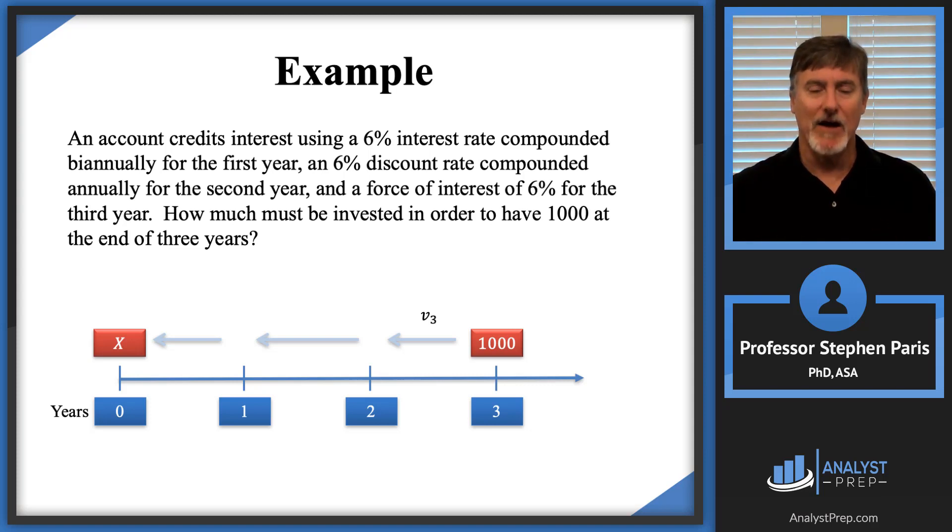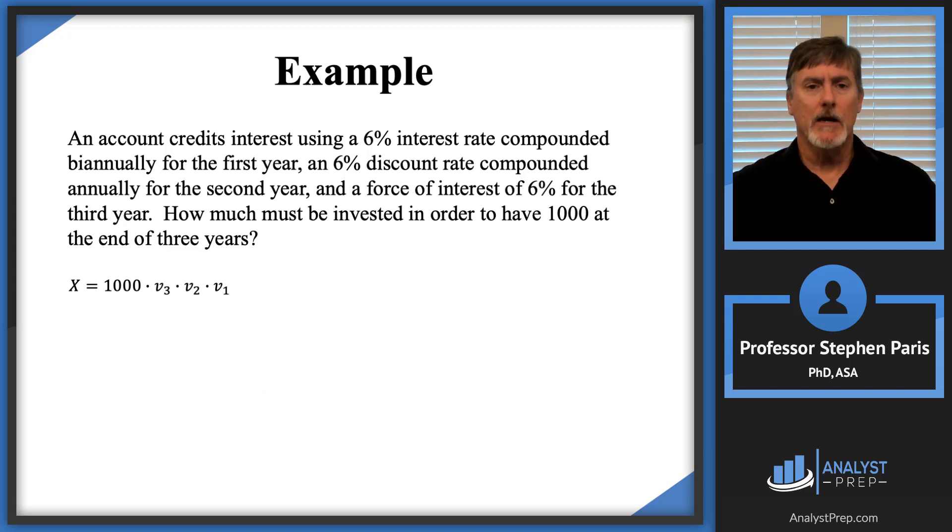I need to discount it from time 3 back to time 2 using what I'm going to denote as a V sub 3. This is some notation that I'll pick up again in Module 4, but I'm going to go ahead and use it now also. Then I need to take that amount that I end up having at time 2 and discount that back to time 1. So I'll use a V sub 2 to denote that discount factor. The annual discount factor for year 2 is V2. And then the annual discount factor for year 1, I'm going to denote by V1. Then my final answer would be that relating the CapEx to the 1,000 is that CapEx will be 1,000 times the V3 times the V2 times the V1. I'm going to need a little bit of room, so I'm going to delete the timeline.